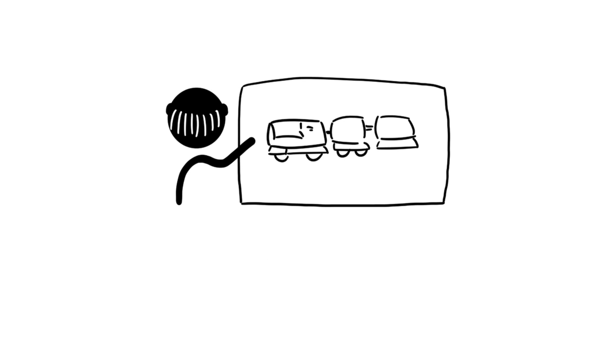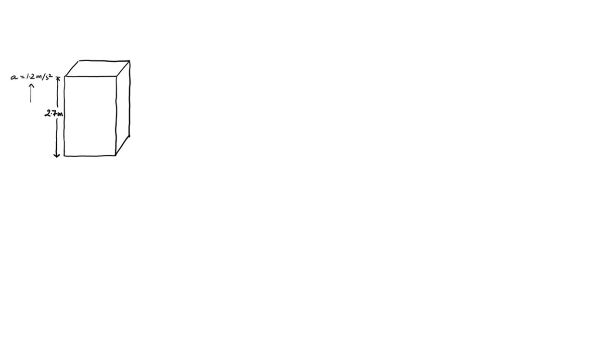Pay close attention because it's going to be complicated. In this example we have an elevator car with a height of 2.7 meters from ceiling to floor, accelerating at 1.2 meters per second squared in the upward direction, starting with an initial velocity of 0 meters per second. Two seconds after that, a bolt starts falling down from the ceiling of the elevator car.